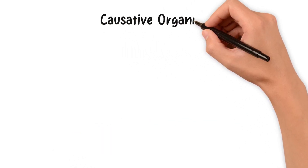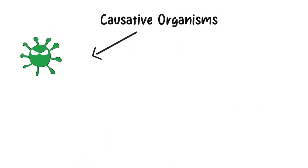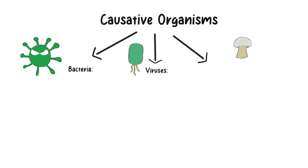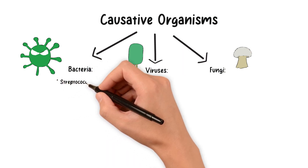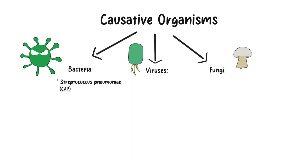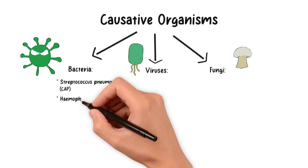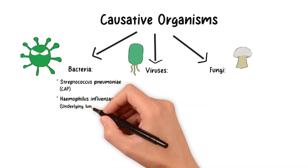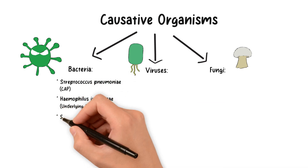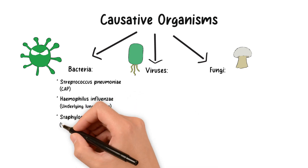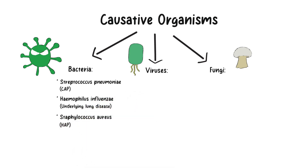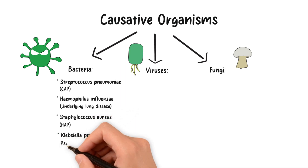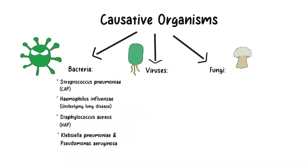The causative organisms of pneumonia vary depending on the type and setting, and include bacteria, viruses, and in rare cases fungi. Common bacterial pathogens include Streptococcus pneumoniae, most prevalent in community-acquired pneumonia cases; Haemophilus influenzae, often seen in patients with underlying lung diseases; Staphylococcus aureus, including methicillin-resistant strains in hospital-acquired pneumonia settings; and Klebsiella pneumoniae and Pseudomonas aeruginosa, commonly associated with severe hospital-acquired pneumonia and those with risk factors.